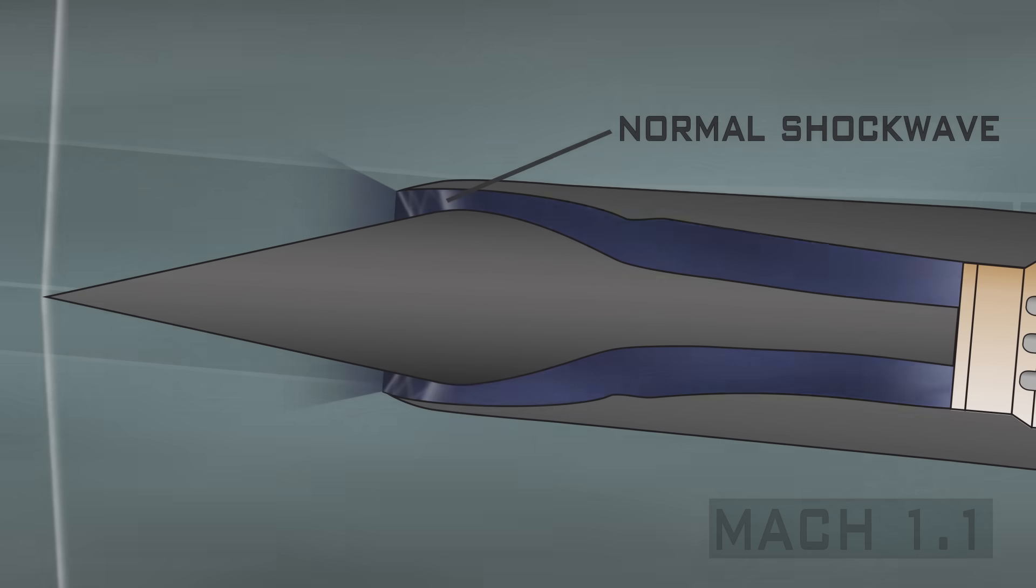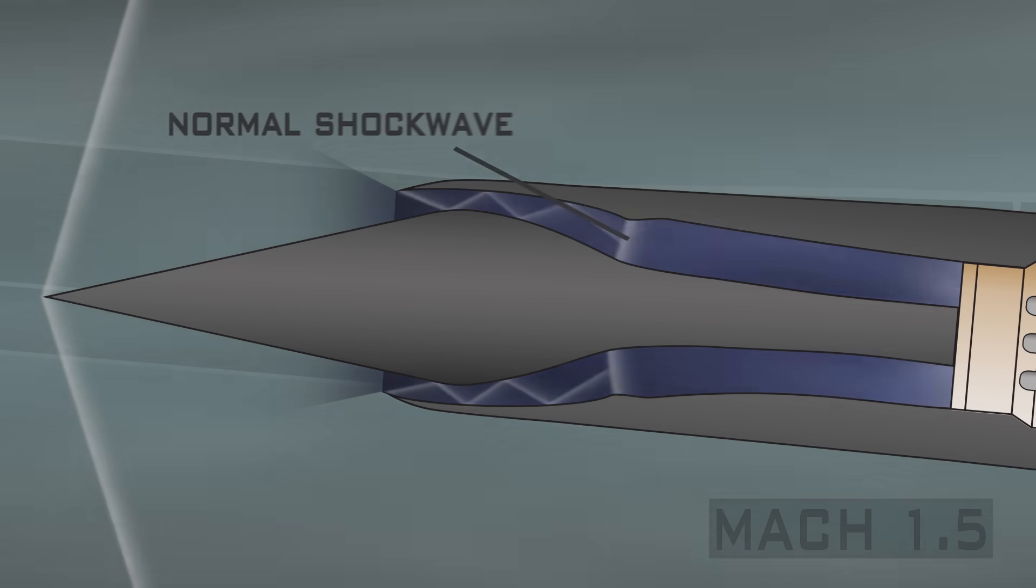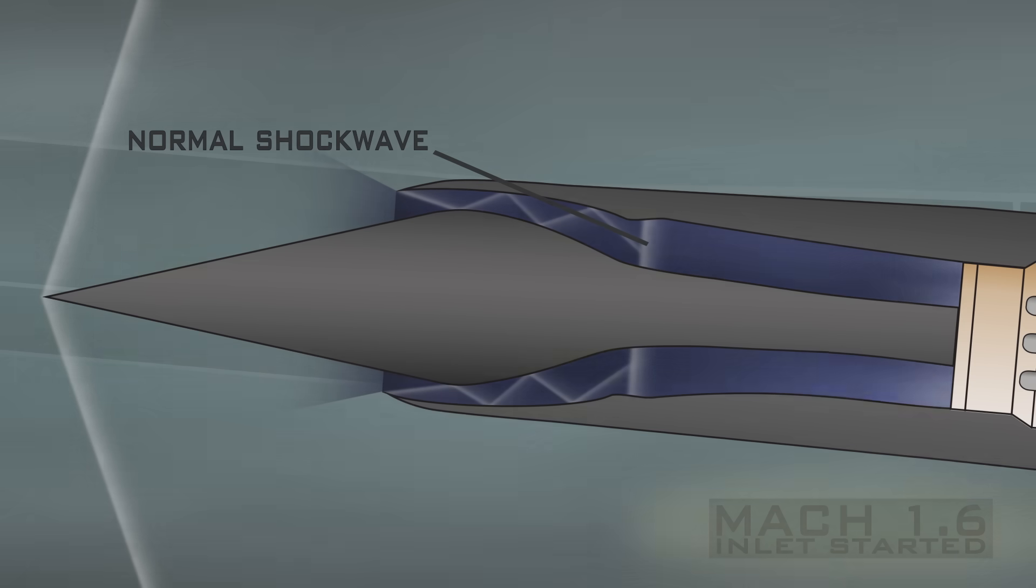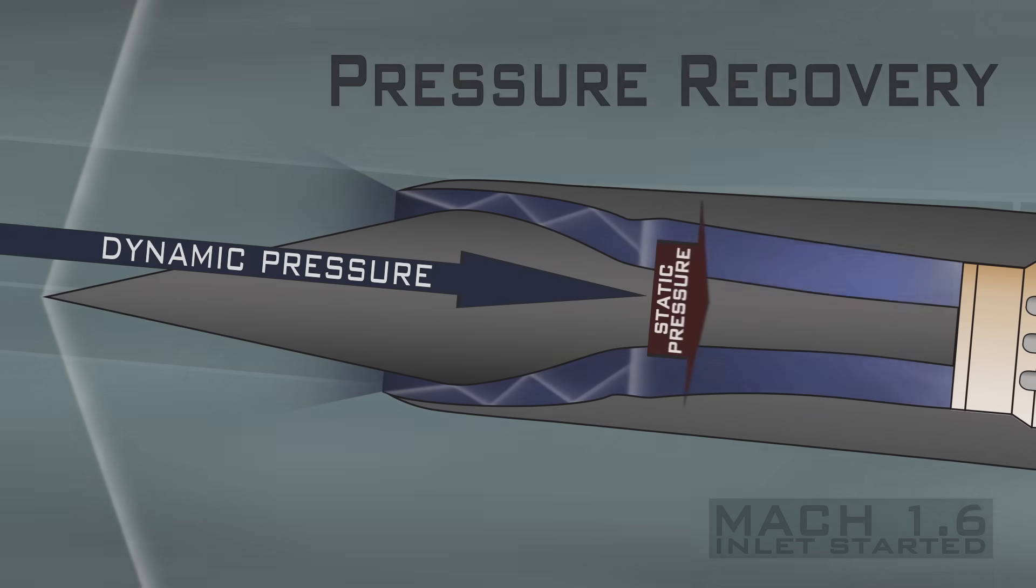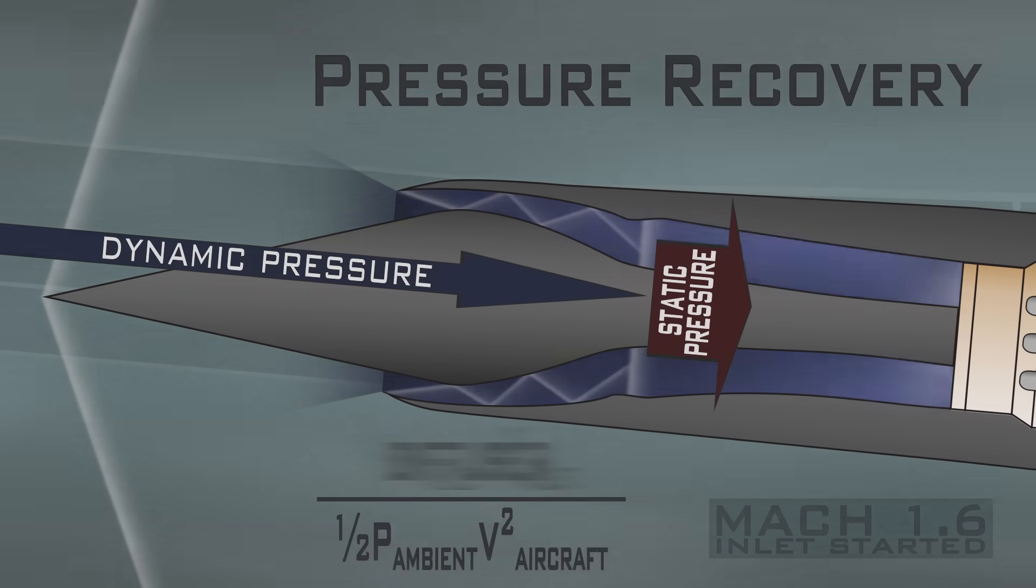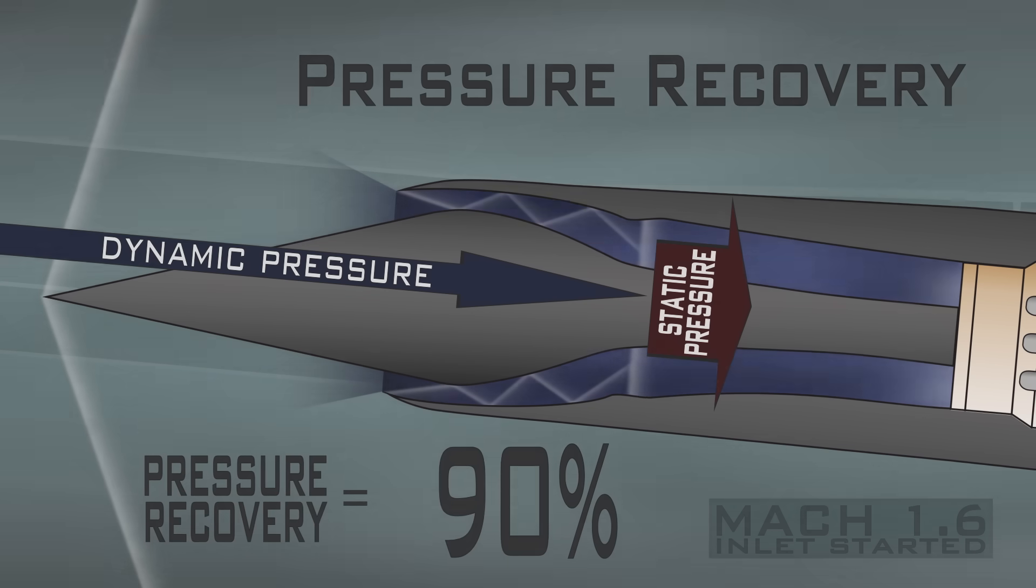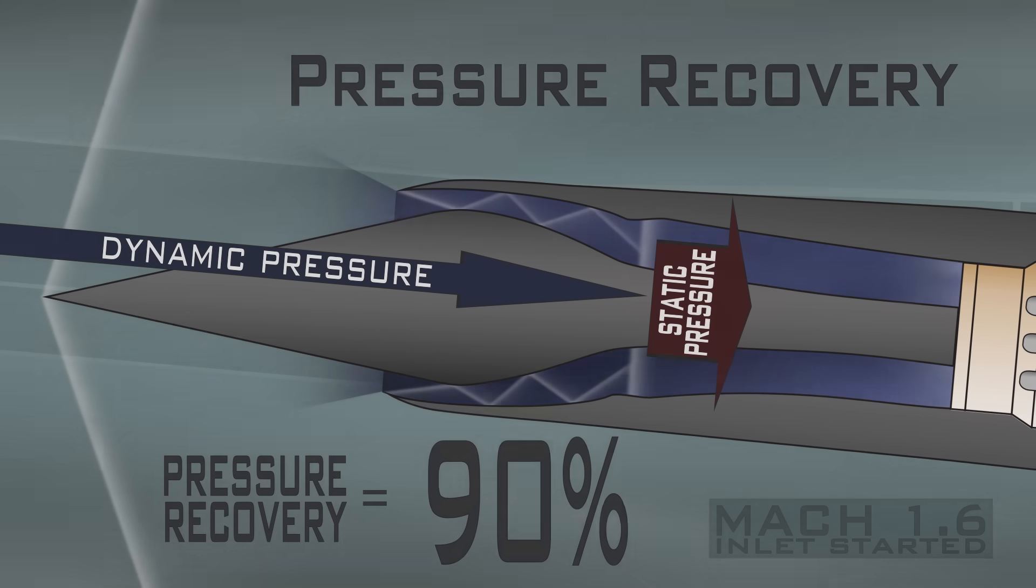Where the normal ends up inside the inlet depends on the speed at which the aircraft is moving and the shape of the inlet and inlet spike. When the aircraft hits Mach 1.6, the normal ends up in the best place inside the inlet for pressure recovery, which is the percentage of the pressure caused by the plane's supersonic flight forward that gets translated into usable pressure inside the diffuser for the engine. This ratio is a very high 90% for the SR-71 when flying at Mach 3.2.